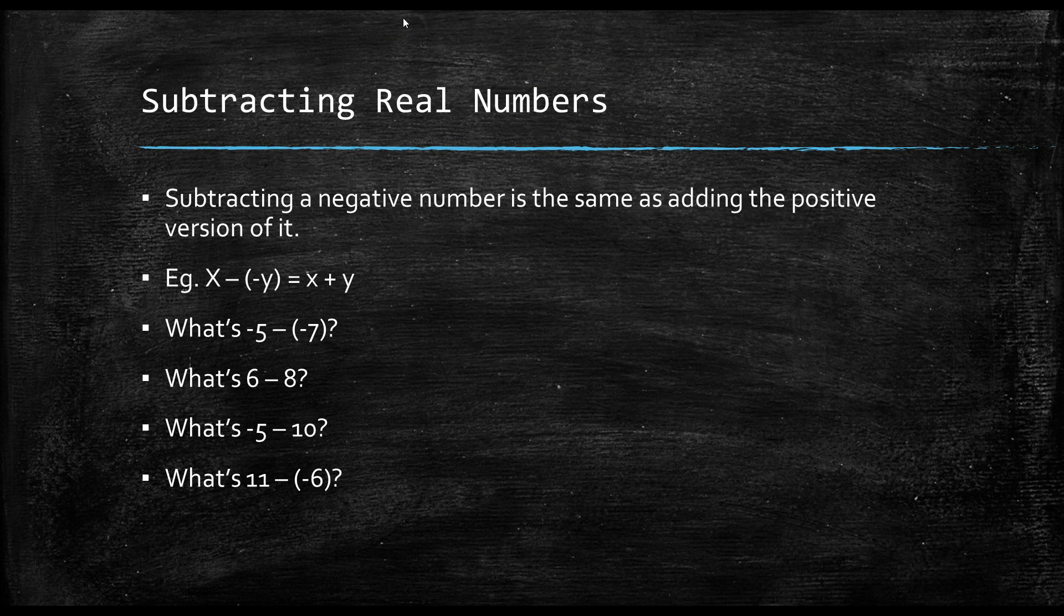Let's move on to subtracting real numbers. Subtracting a negative number is simply the same as adding the positive version of it. So, x minus negative y is equal to x plus y. The two negative signs cancel out, and then it just becomes adding the positive version of it.